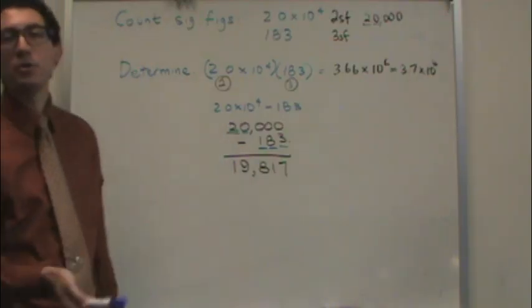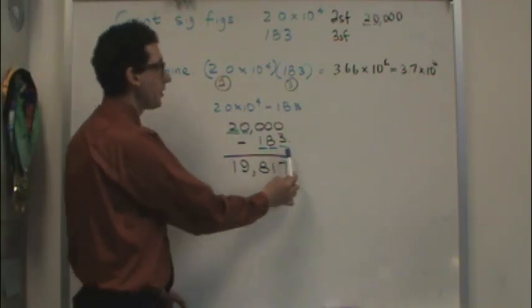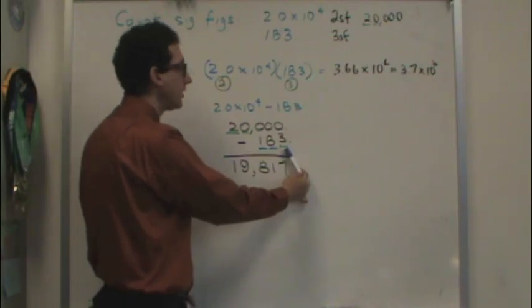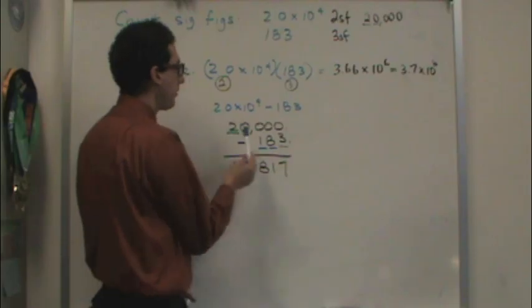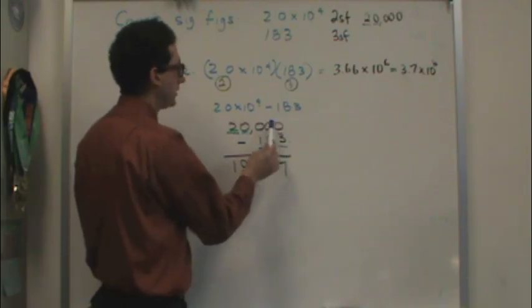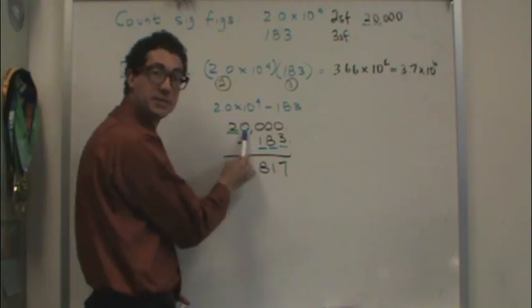You look at the one with the most error. So, for example, 183 has the most error, or the last significant figure, in the ones position. However, this one has its error in the ones, tens, hundreds, thousands position. That means this will have its error in the thousands position.